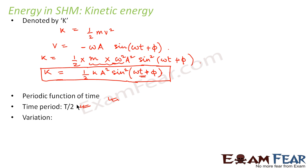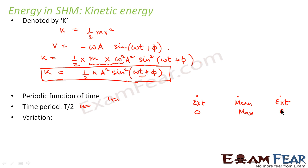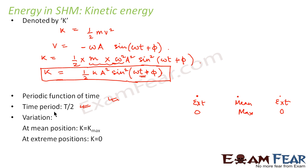Now, how does kinetic energy vary? The kinetic energy is zero at the extreme position, reaches a maximum value at the mean position, and then again decreases to zero at the extreme position. So at mean position kinetic energy is K_max, and at extreme positions kinetic energy is zero.